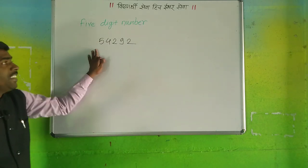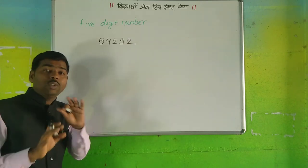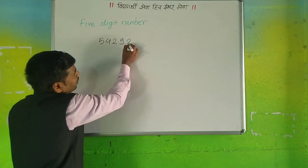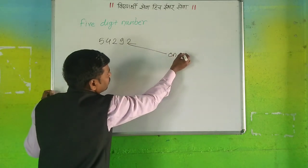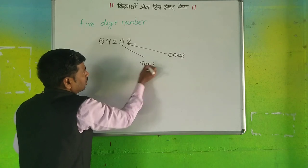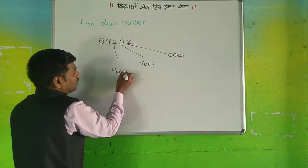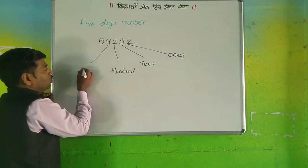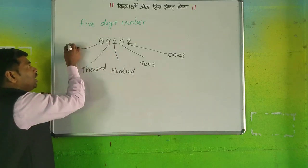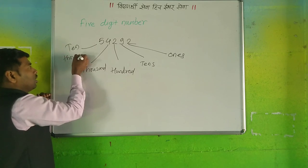In five digit numbers, we have to know how many places are there and which places are there. The first place is ones. Then the second one is tens. The third one is hundreds. Then the fourth one is thousands. And the last one is ten-thousands.